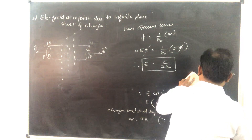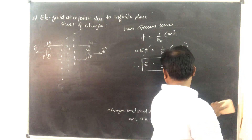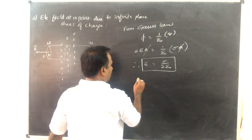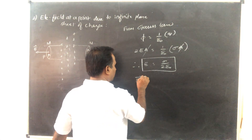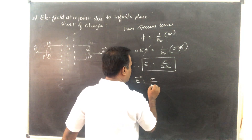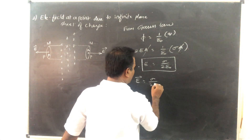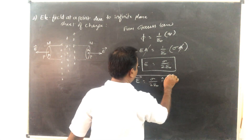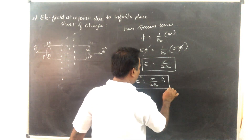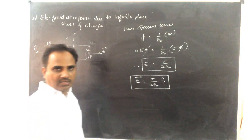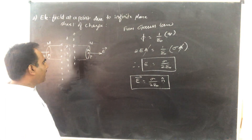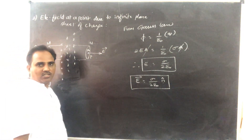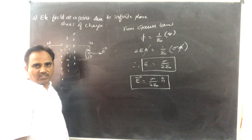In vector form, E equals sigma divided by 2-epsilon-naught times n-cap, where n-cap is a unit vector directed away from the plane sheet of charge if sigma is greater than 0, meaning the charge is positive.